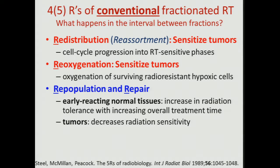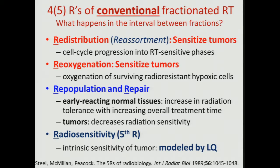The final two R's — repopulation and repair — work to spare normal tissue effects. They allow repopulation and repair of damage in the normal tissue, working for your therapeutic ratio. We're going to focus predominantly on reoxygenation because that's the important role for tumour hypoxia and the vascular effects I'm talking about today. We should also mention radiosensitivity — Mike gave a very nice talk describing radiosensitivity with the LQ model. These five R's of radiobiology are well described in a nice article from Gordon Spear and colleagues.